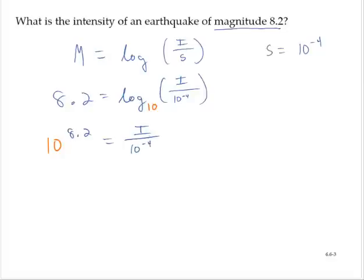So then to solve for i, I will multiply by 10 to the negative fourth on both sides of the equation. On the right hand side, those 10 to the negative fourths reduce out.